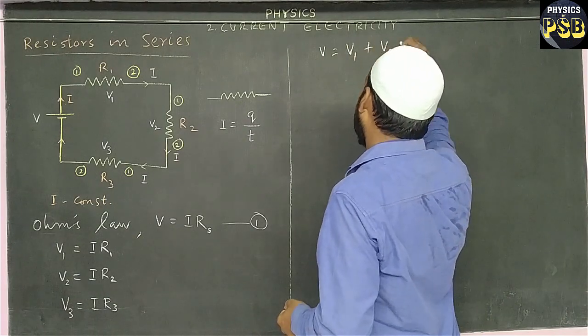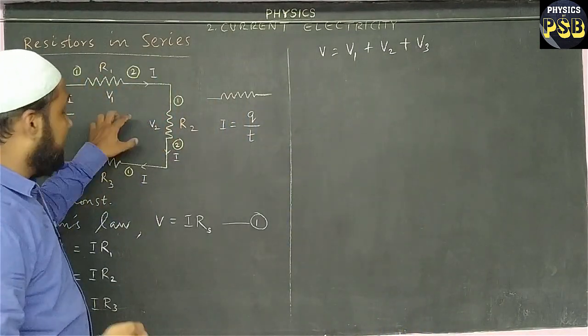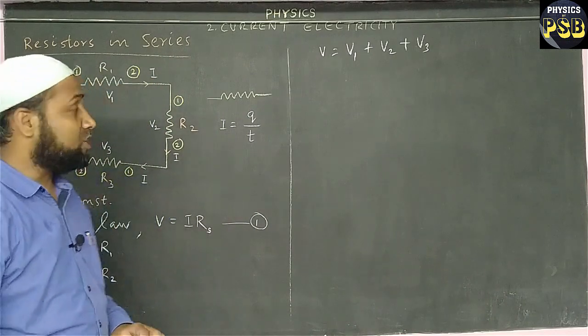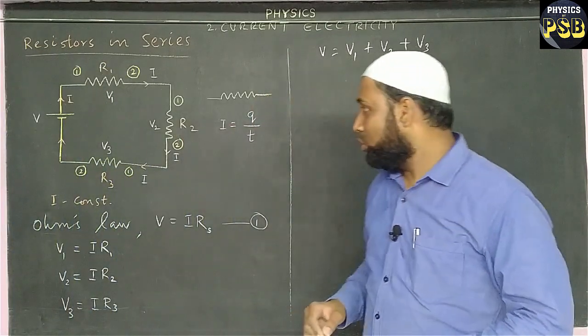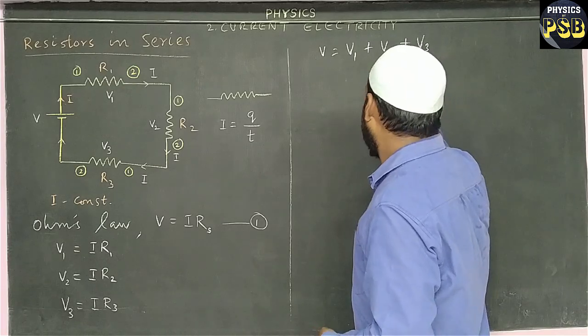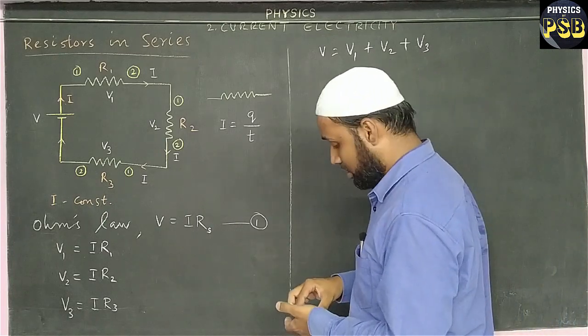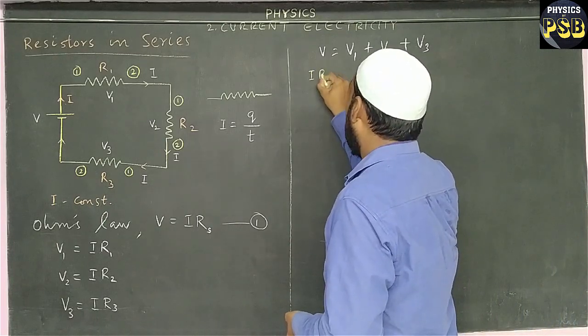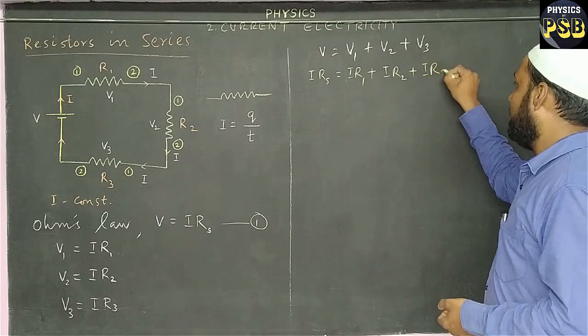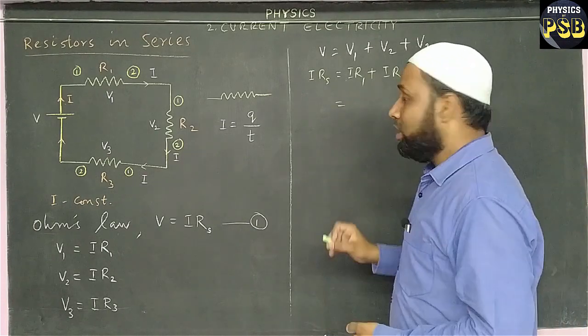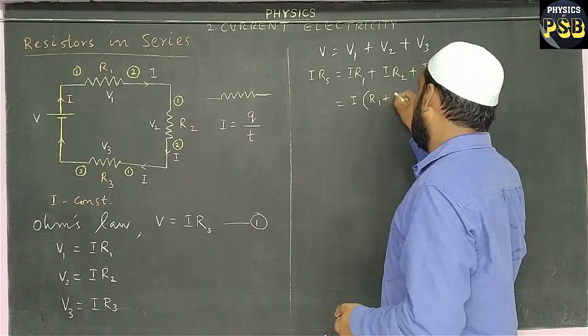But here the aim is to get the equivalent resistance or the total resistance offered by these resistors in series. So for that I am going to substitute the value of V, V1, V2, and V3 from these equations. So V is nothing but IRS, and V1 equals IR1, V2 equals IR2, and V3 equals IR3. In this equation, I is common, so it is taken out. I write the remaining term within brackets.